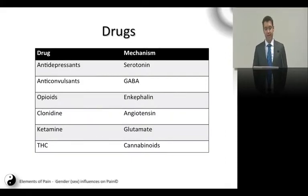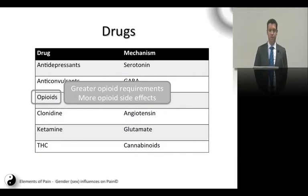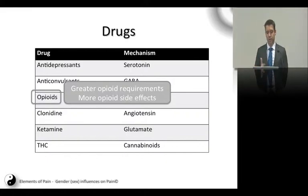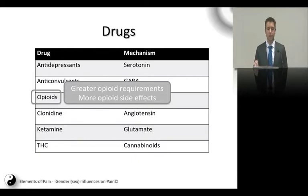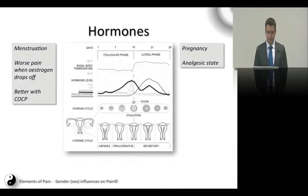Looking at drugs influenced by hormones, opioids are a major one. Females have a greater opioid requirement and experience more side effects from opioids. This is clinically important — when treating postoperative pain in females, we shouldn't default to the same doses as males. We should perhaps give females greater or different opioids; newer synthetic opioids like oxycodone may have different effects in females. This points toward individualized medicine based on patient characteristics rather than treating everyone the same.